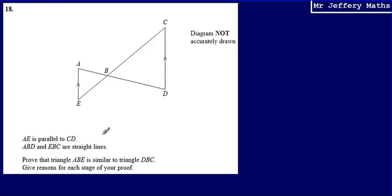This is question 18. Here we're told that AE is parallel to CD, and ABD and EBC are straight lines. We're then asked to prove that triangle ABE is similar to triangle DBC. It also tells us to give reasons.